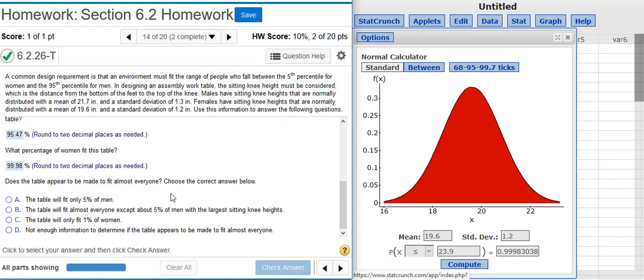And now the last part of the problem asks: does the table appear to be made to fit almost everyone? Well, the table is fitting ninety-five percent of the men and practically all of the women. So yeah, it's going to fit almost everyone. The only ones who won't fit will be about five percent of the men and a very, very small percentage of the women. So I select the answer with that option.